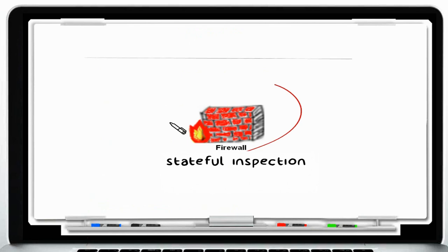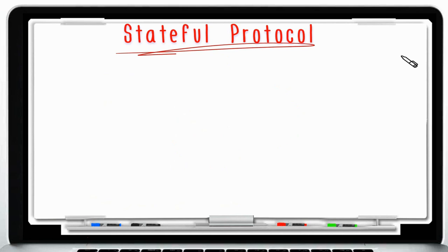We cannot talk about Stateful Inspection Firewall without first talking about stateful protocols. TCP, Transmission Control Protocol, is a stateful protocol. A primary characteristic of a stateful protocol like TCP is that it's a connection-oriented protocol, meaning a connection needs to be established first before any data can be exchanged. A TCP connection can be broken down into three main phases that need to be completed in sequential order for a client or server to start transferring data.